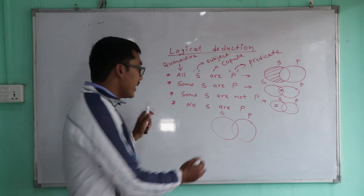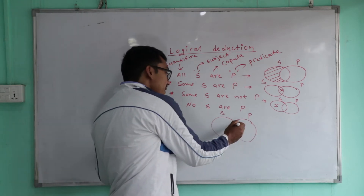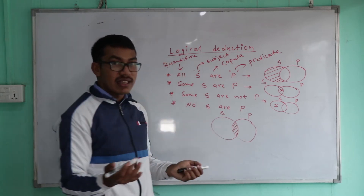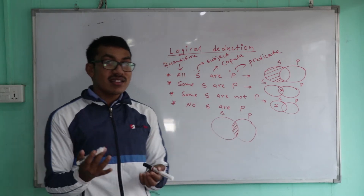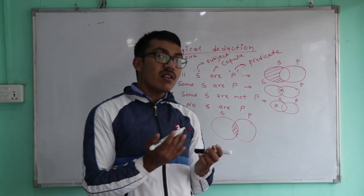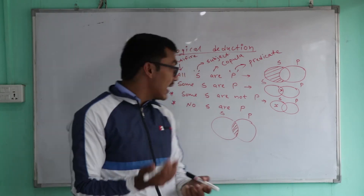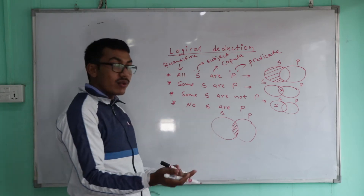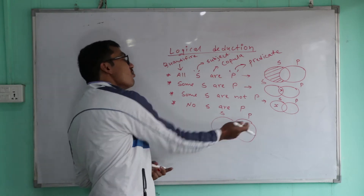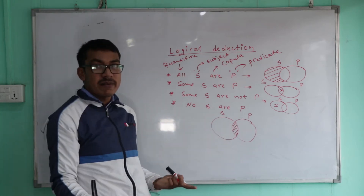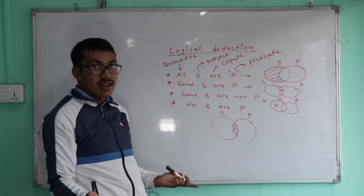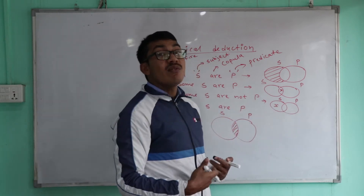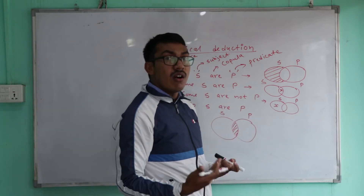What does 'No S are P' mean? S and P share no common part — the common part is removed. They are completely separate circles with no intersection.